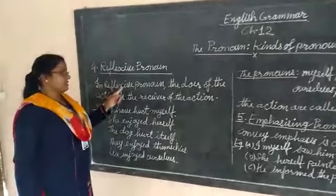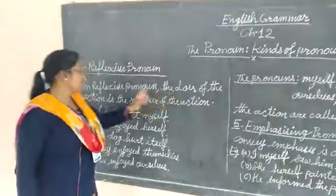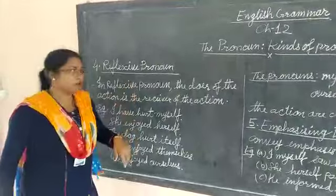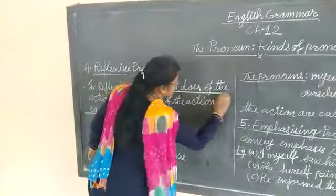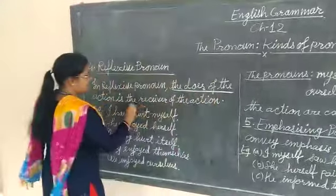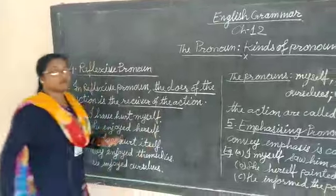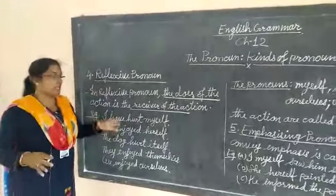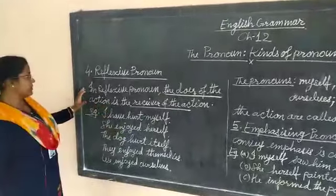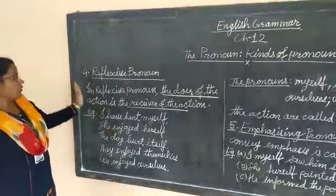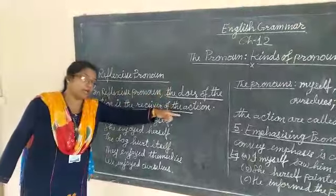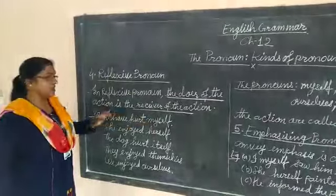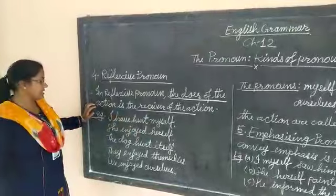In reflexive pronoun, the doer of the action is the receiver of the action. The one who is performing the action, he himself is receiving the action too. Let us see the example.